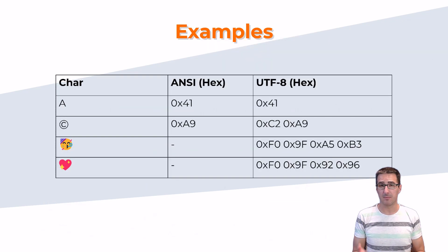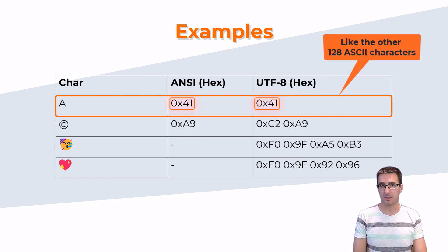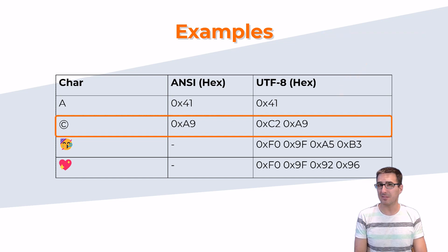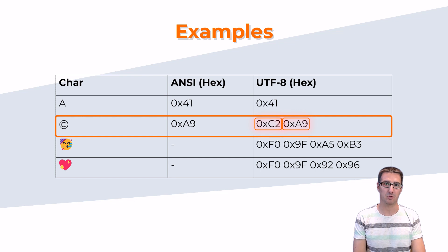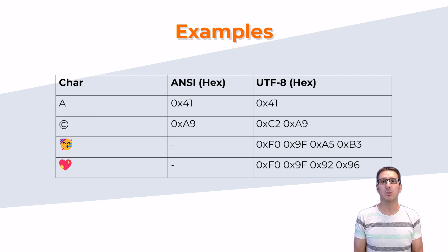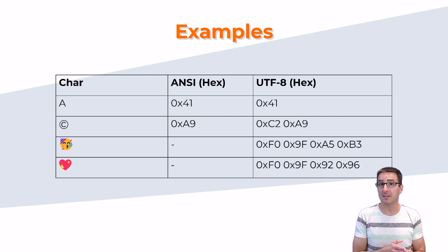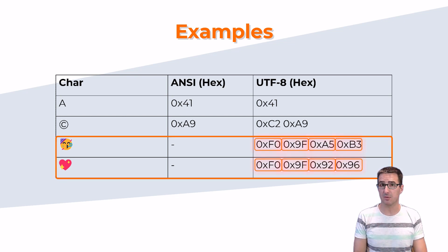Here are a few examples. No matter whether it's ASCII, ANSI, or UTF-8, the character capital A is stored with the same value everywhere. The copyright symbol is not included in ASCII. In Western ANSI encodings, it is stored in one byte. In UTF-8 encoding, the copyright symbol requires two bytes, and here you can see the values of both bytes. There are hundreds of thousands of characters that do not occur in the usual ANSI encoding but appear frequently in UTF-8, and some even need as many as 4 bytes — like these two emojis here.